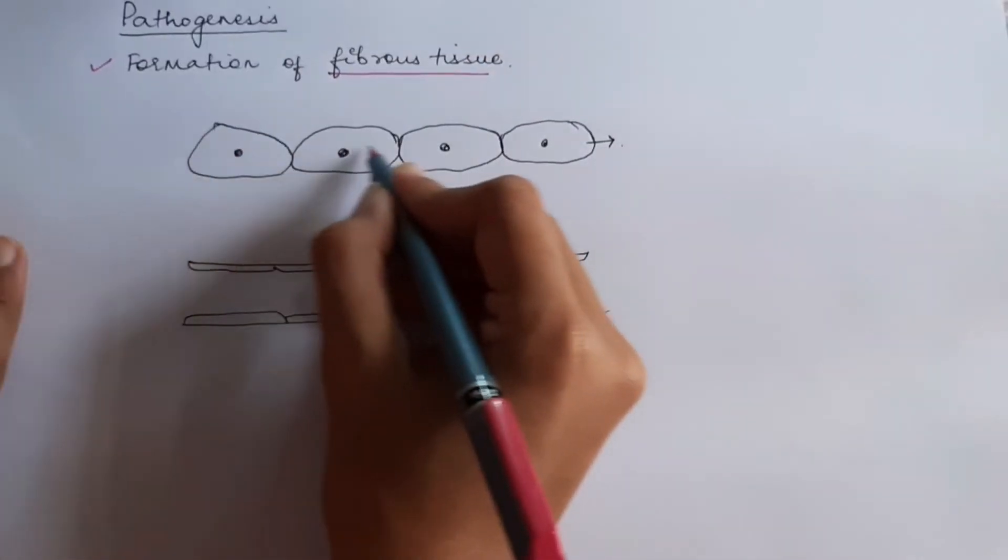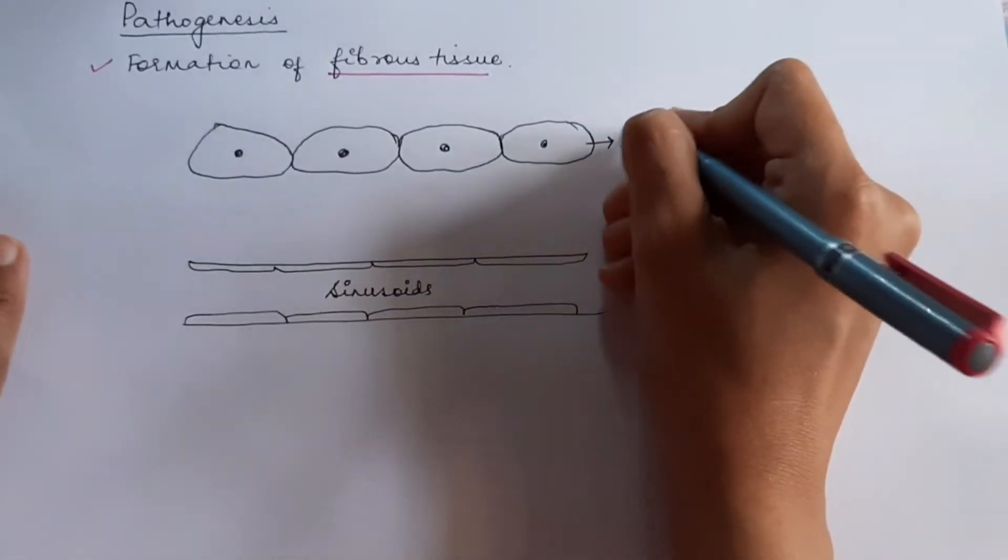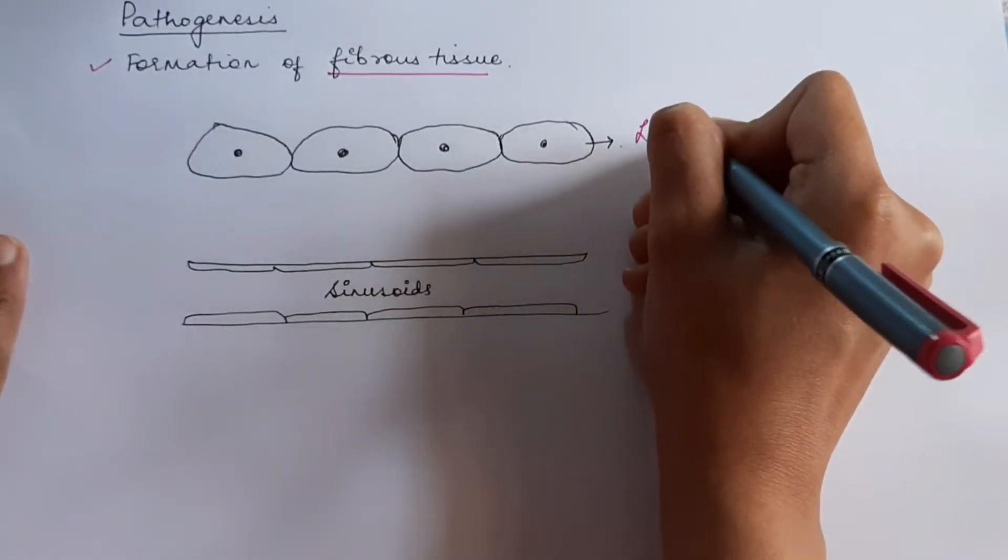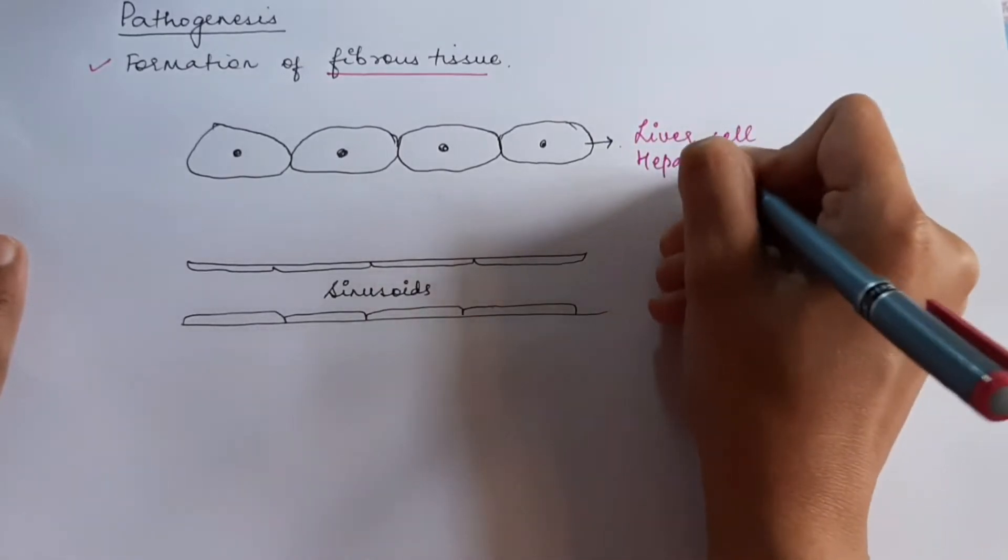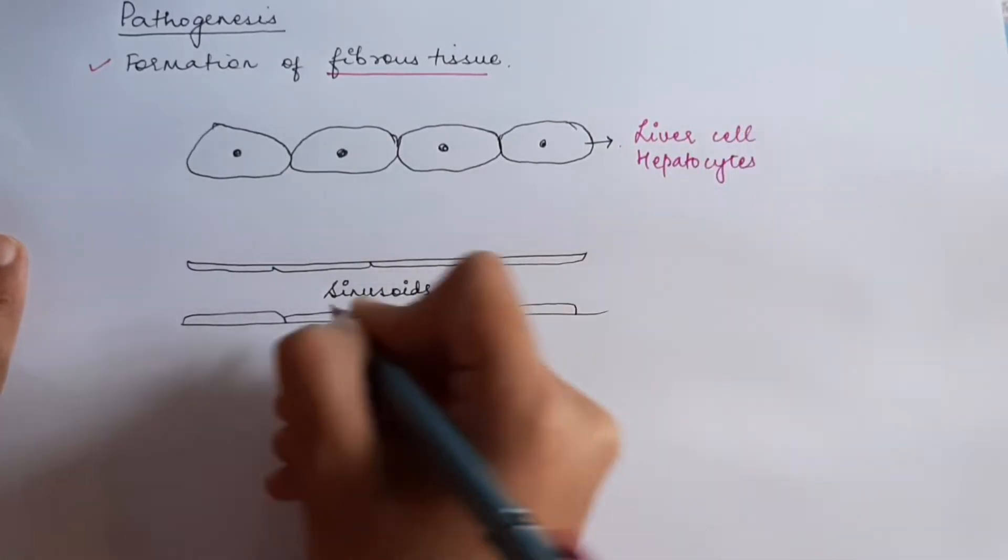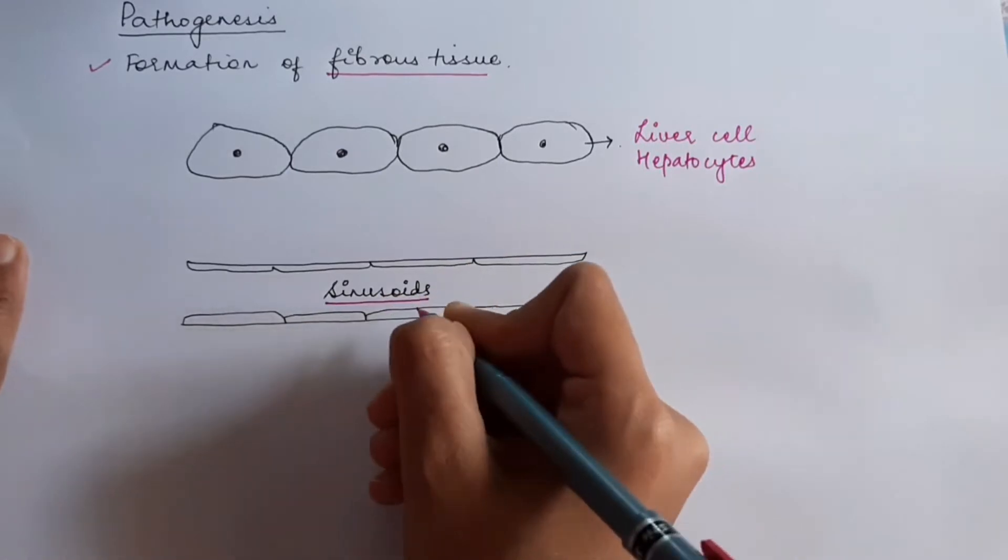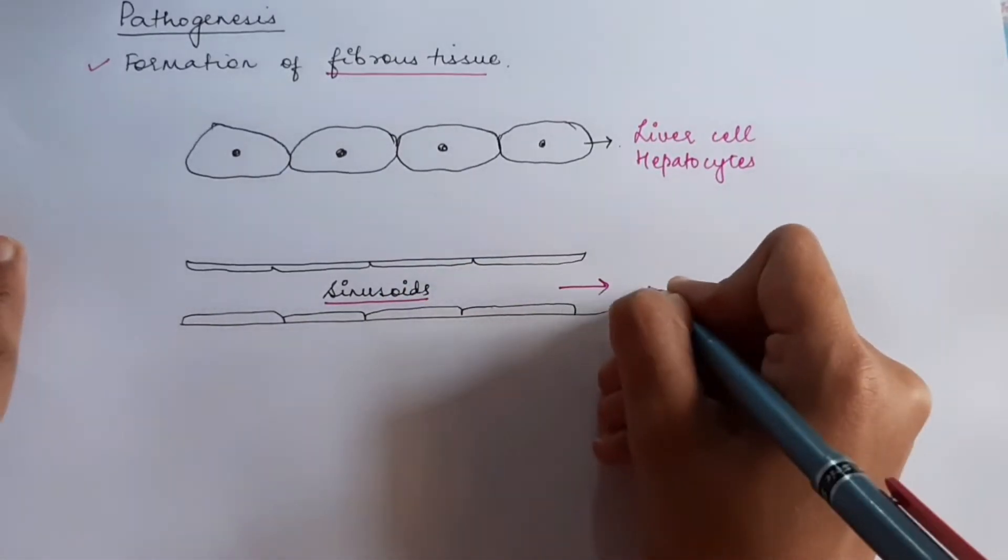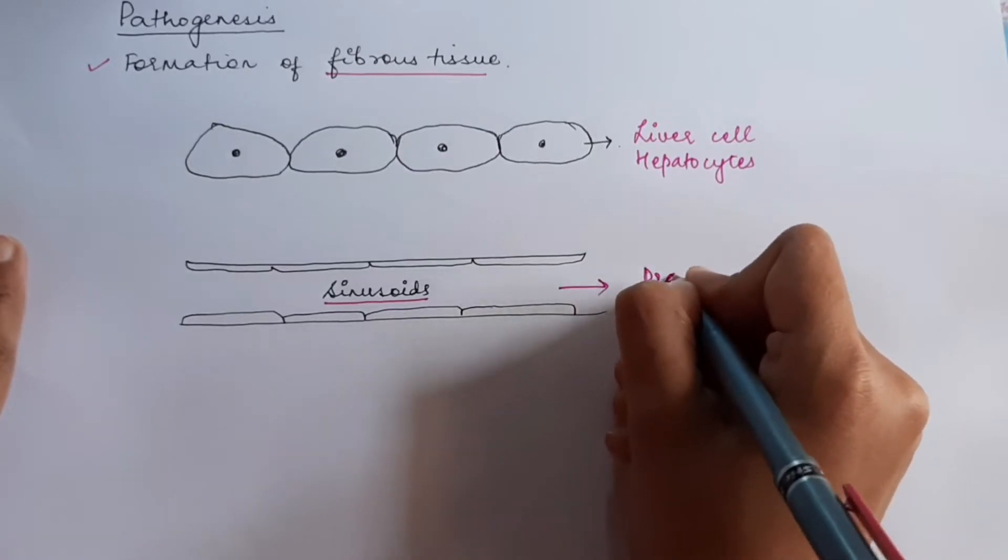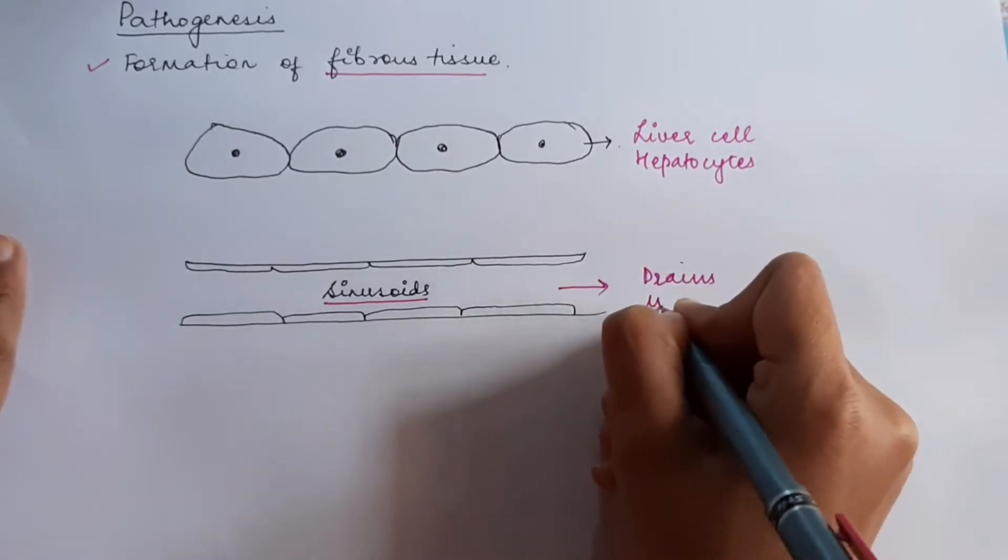So, these are the normal liver cells. The liver cells are also known as hepatocytes. And in the liver, we see sinusoid space, which will drain into the central vein.